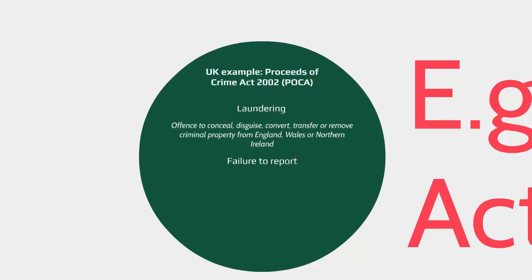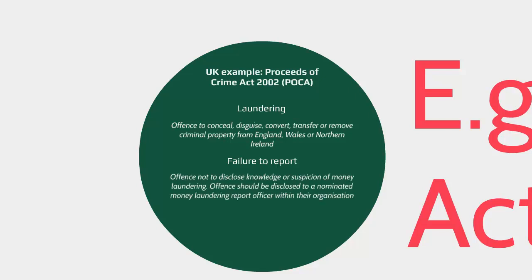The second offence is failure to report. It is an offence if someone doesn't disclose knowledge or suspicions they have regarding money laundering. This applies only to individuals in a relevant business such as accountancy. In the UK, the offence should be disclosed to a nominated money laundering reporting officer within their organisation or to the National Crime Agency.